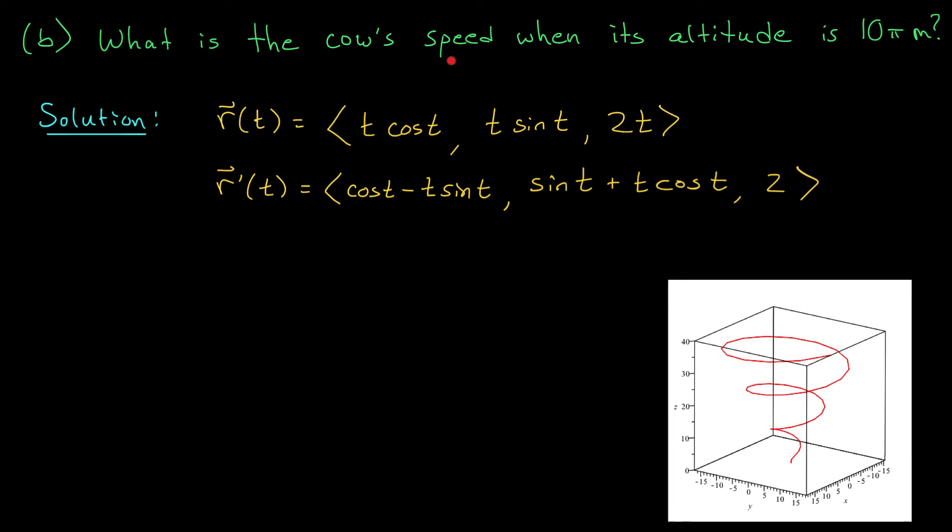Well, we want to know the cow's speed when it reaches an altitude of 10 pi meters. The altitude of the cow, the cow's height, is described by the z component of its position vector. So our cow reaches a height of 10 pi meters when z, which is 2t, is equal to 10 pi. Dividing by 2, we find that this occurs at t equals 5 pi seconds.